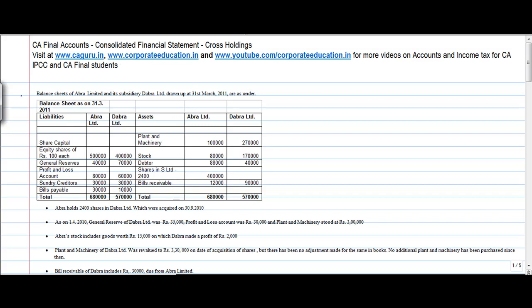Okay, let us see another problem on consolidated financial statements. Balance sheet of Abra Limited and its subsidiary Dabra Limited drawn up as at 31st March 2011 are as under. So you have two companies, one is Abra and the other one is Dabra.